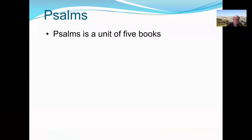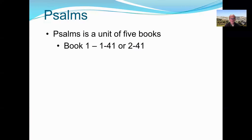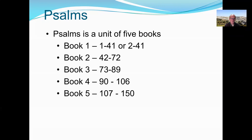This video is about the Book of Psalms and when they were written. Psalms is different from other books because it's an anthology — really a unit of five different books. In an English Bible, the book opens with 'Book One,' then after Psalm 41 it says 'Book Two,' and so on through Book Five. Some debate whether Book One spans Psalm 1 to 41 or 2 to 41, since Psalm 1 may be an introduction to the entire collection.